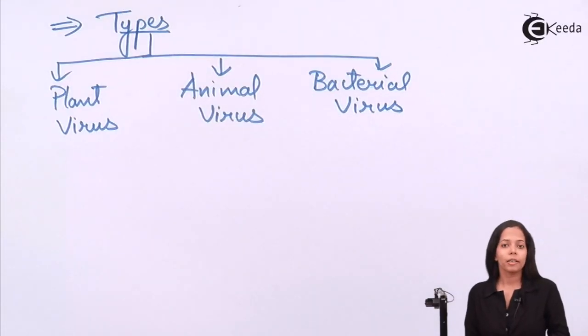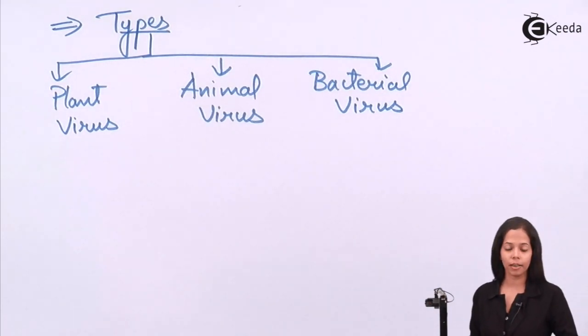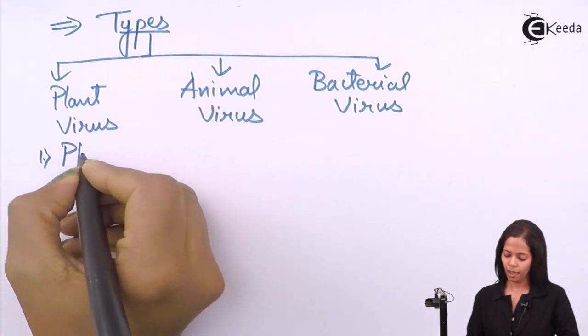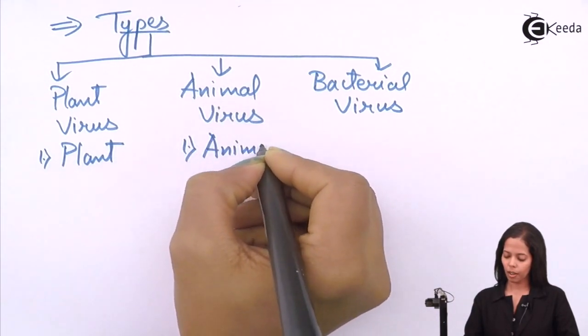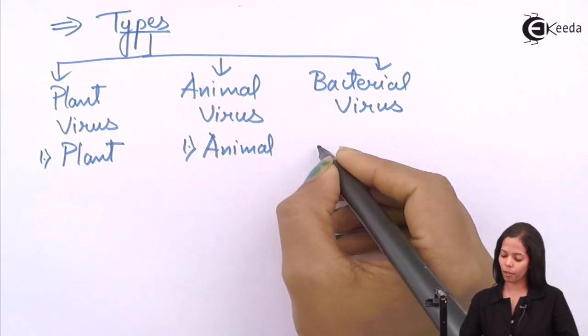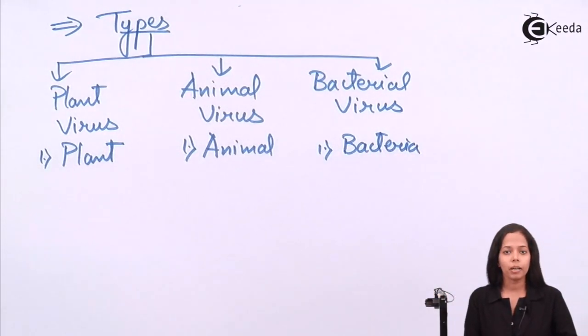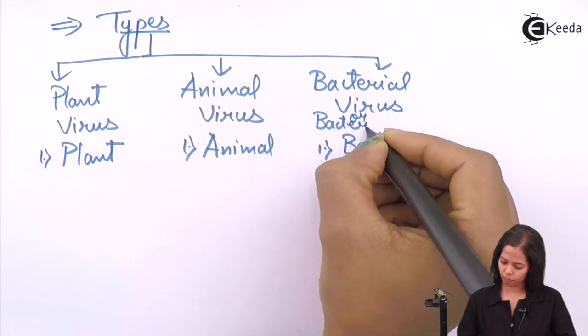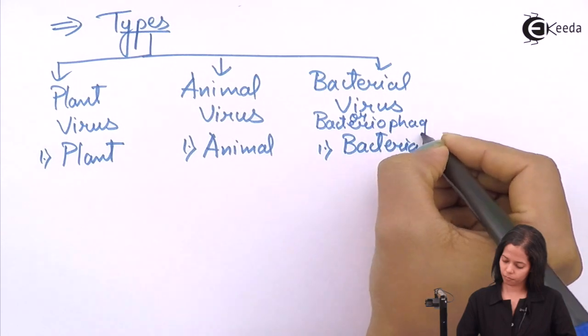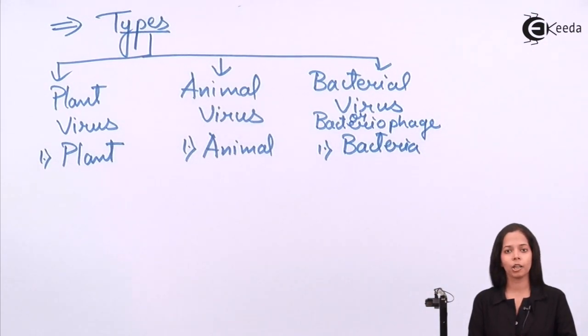Now we are going to study types of virus in detail. Speaking about plant virus, what will be the host body for plant virus? It is plant. Same goes with animal virus, host body animals. Same goes with bacterial virus, host body is bacteria. Now one thing you have to remember student, that bacterial virus is also called as bacteriophage. Phage means killing bacteria. Bacteria killing bacteria virus is called as bacteriophage.